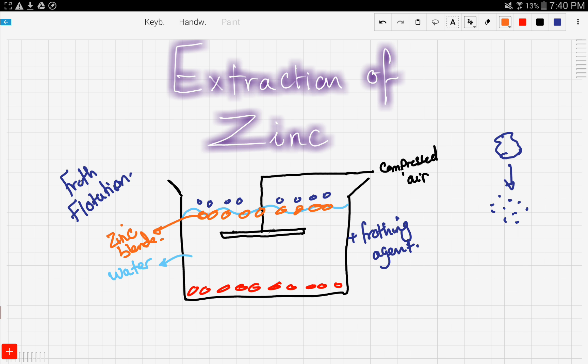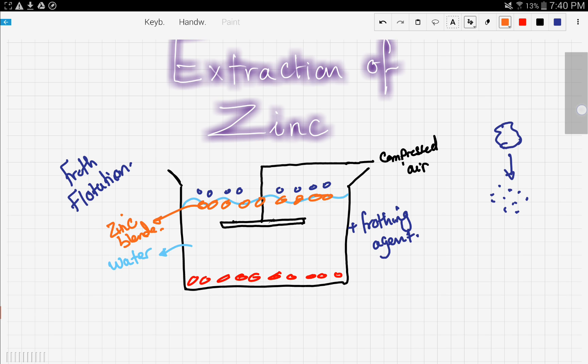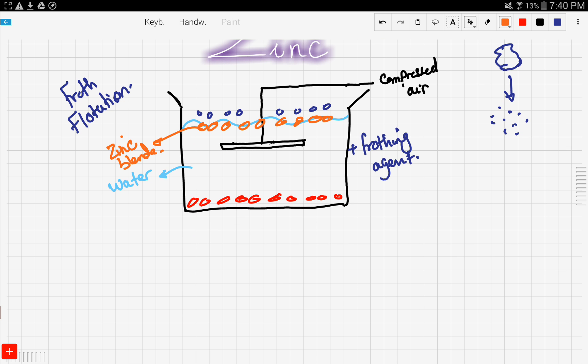Now the next thing that happens is that we take this zinc blend, which is zinc sulfide. And we put it in a furnace and heat it up to high temperatures. And this is the reaction that occurs. It gives out zinc oxide solid plus sulfur dioxide gas.